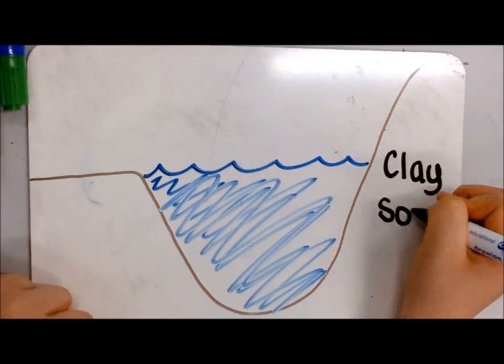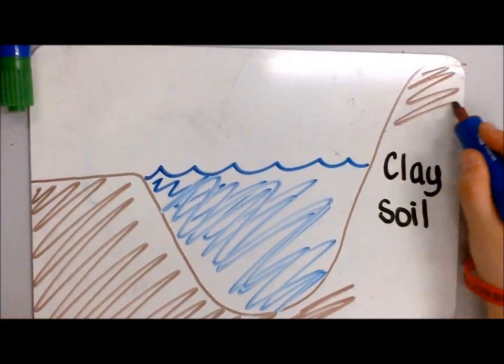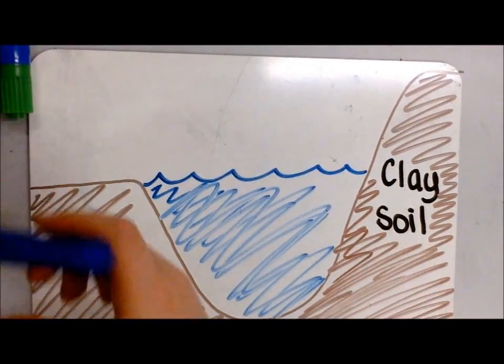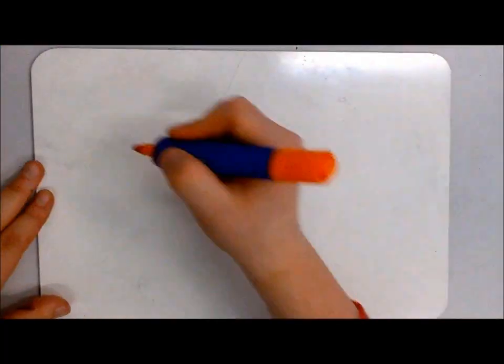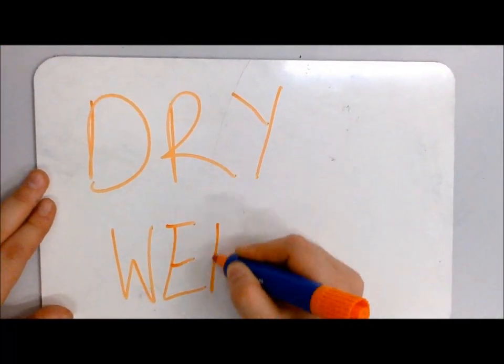Here you have your river channel and of course your river. Slumping usually occurs in clay soil. When the weather is dry, the following happens.